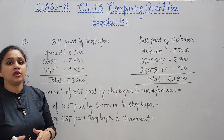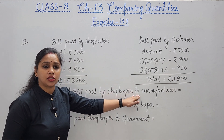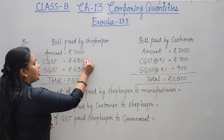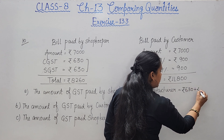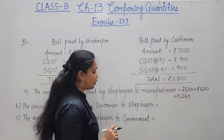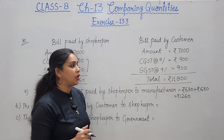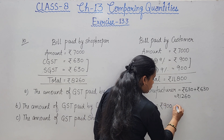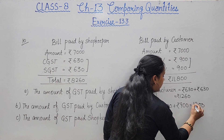Three sub-questions are asked. First: GST paid by shopkeeper to manufacturer = 630 + 630 = rupees 1260. Second: GST paid by customer to shopkeeper = 900 + 900 = rupees 1800.